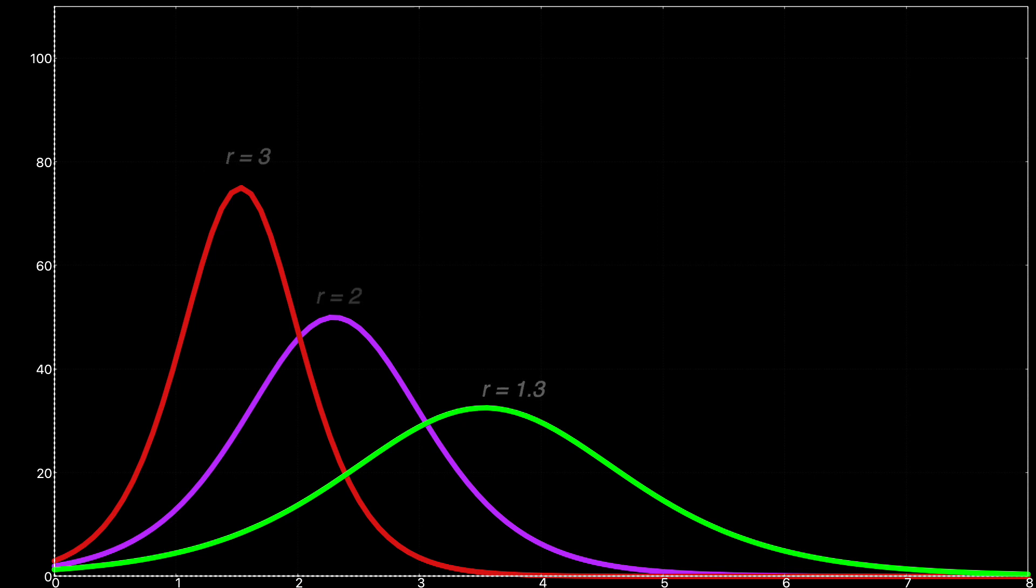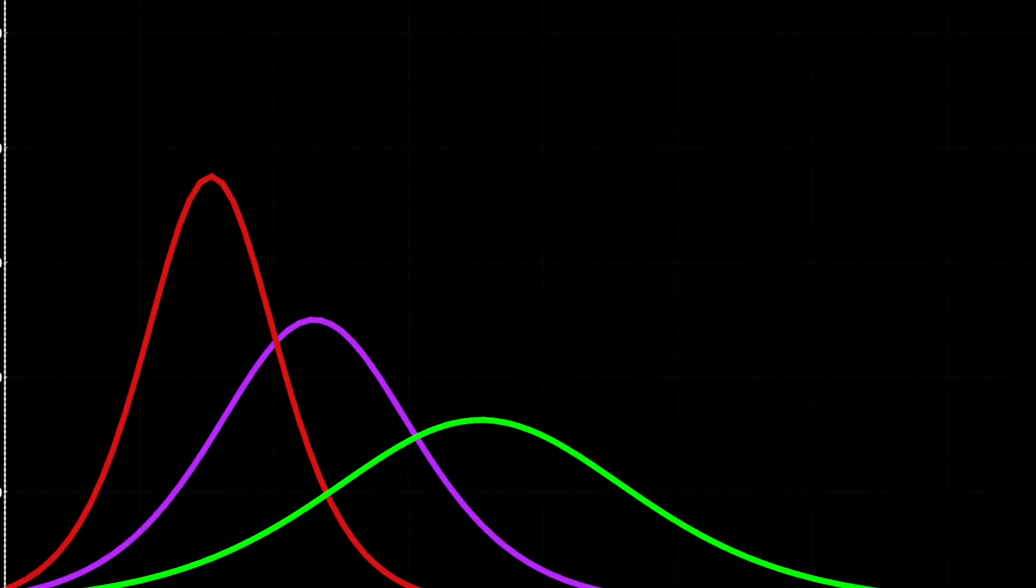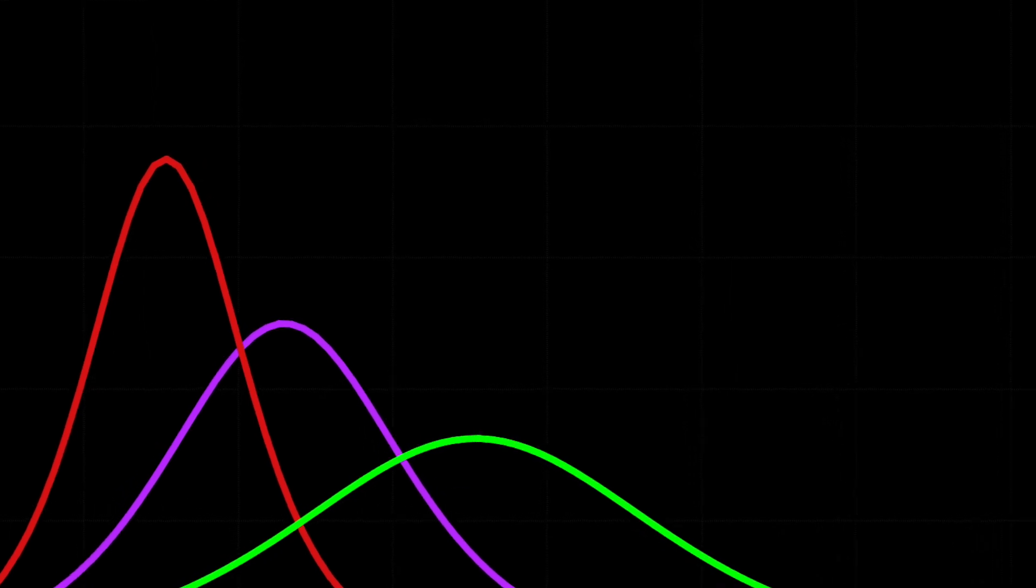This is why mitigation measures that lower the rate parameter, such as social distancing and closing of public facilities, are so important. This is the flattening of the curve that public health experts often emphasize.